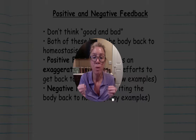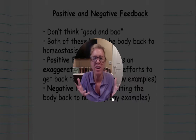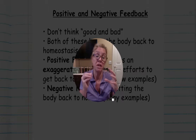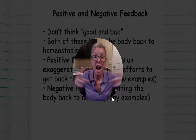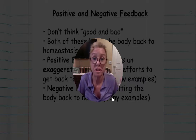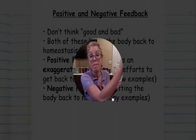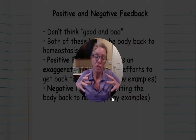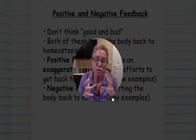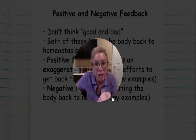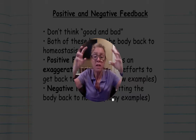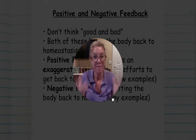An example of positive feedback: imagine an argument with your parents — you argue, they yell louder, you argue more, they yell even louder, escalating to a climactic event. Biologically, a good example is during birth: as the uterus contracts, it pushes the baby against the cervix, which signals the nervous system to contract more, pushing harder against the cervix. This continues until the climactic event of the baby being born.